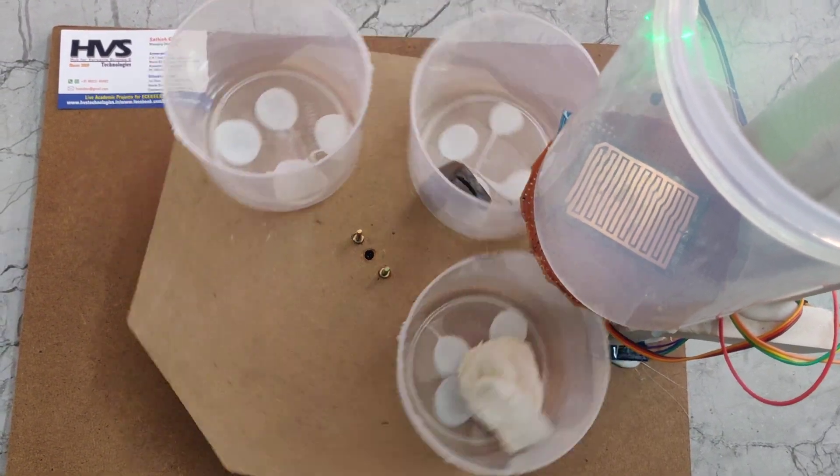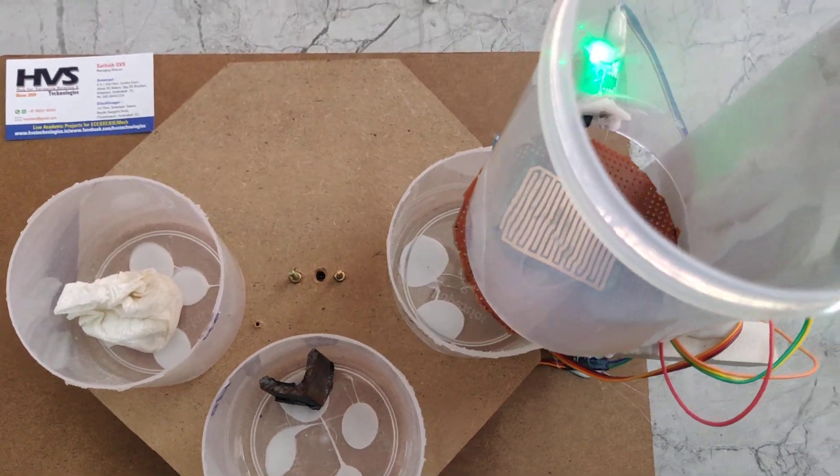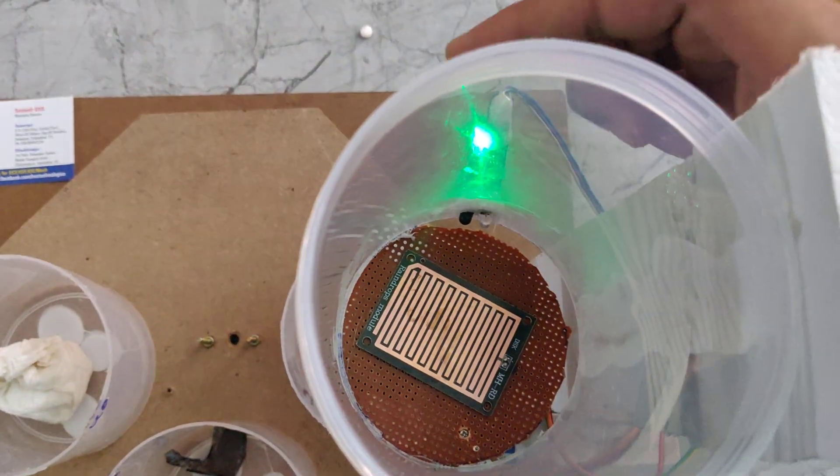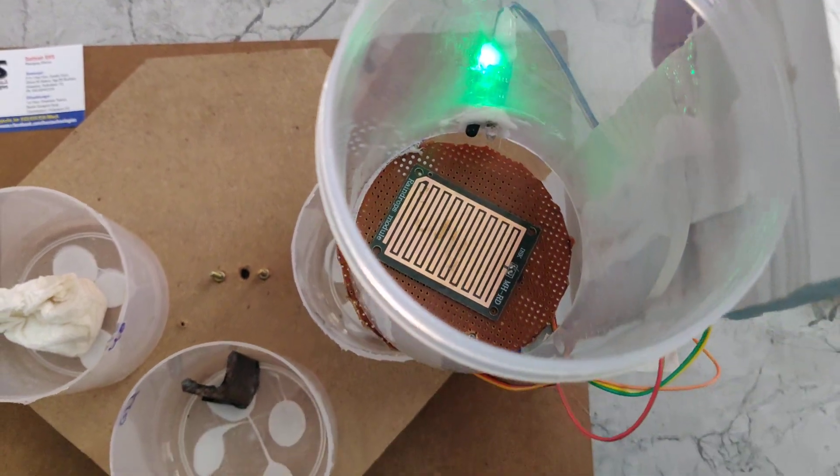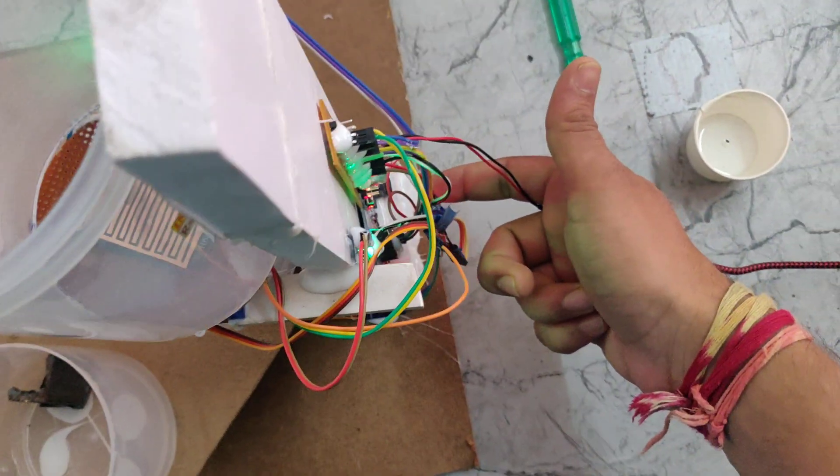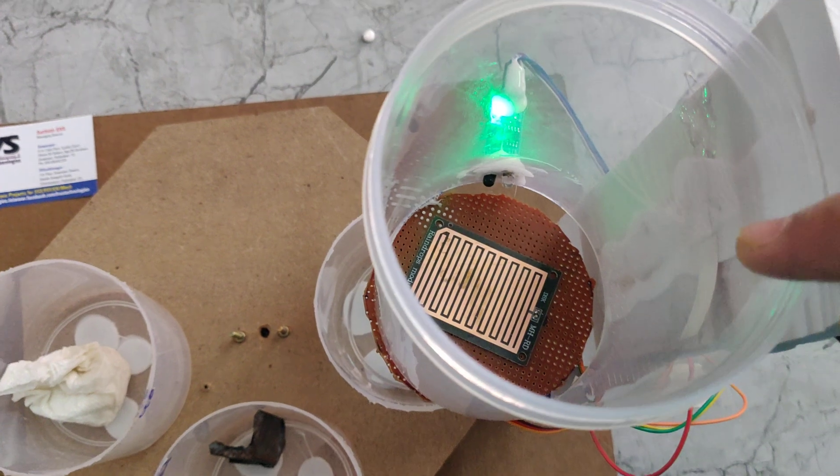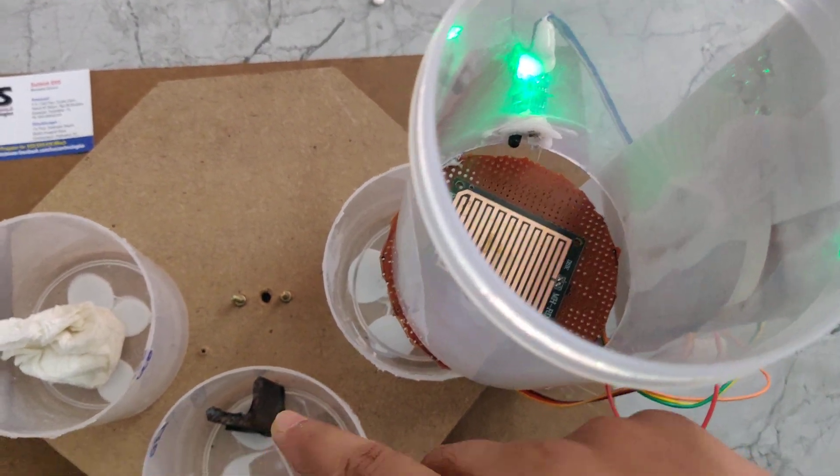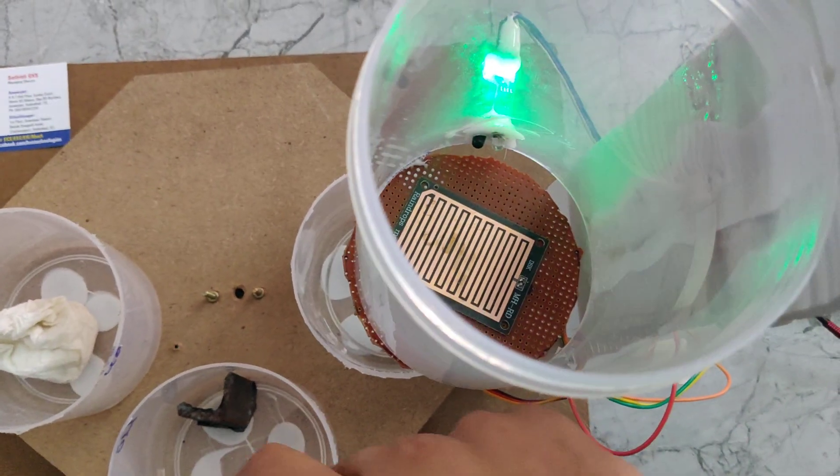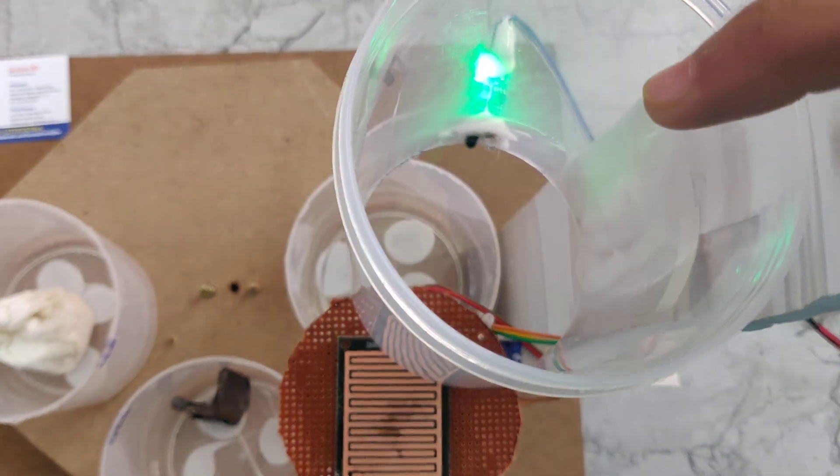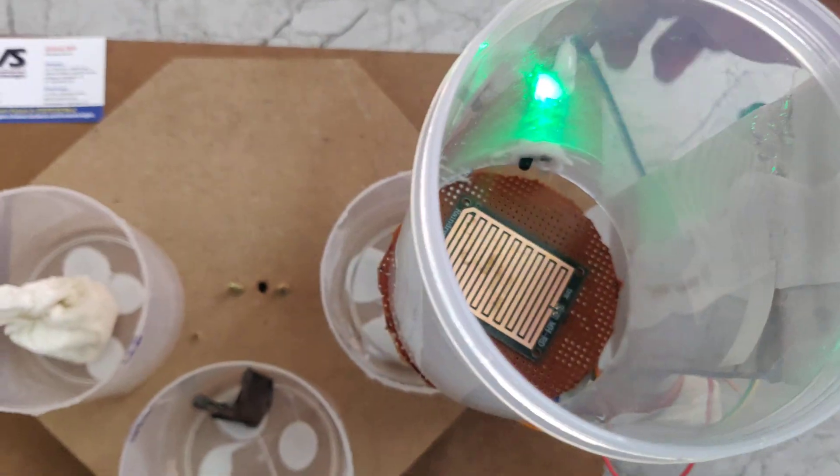It will come to this normal position. If any object is in this box, it will be sensed by this IR sensor and it will send signal to the Arduino board. If I place metal objects or metal waste, it will sense.